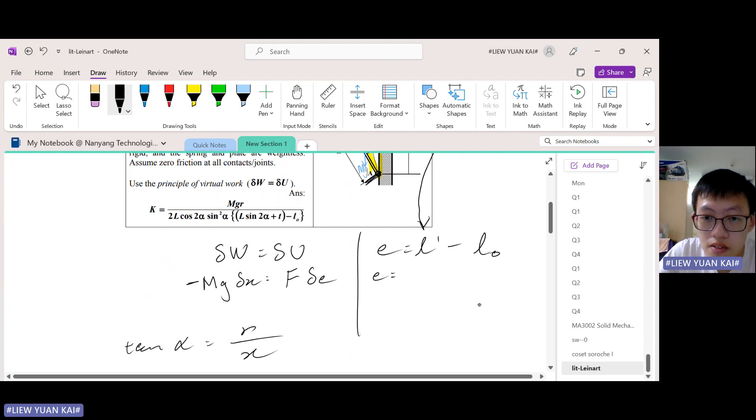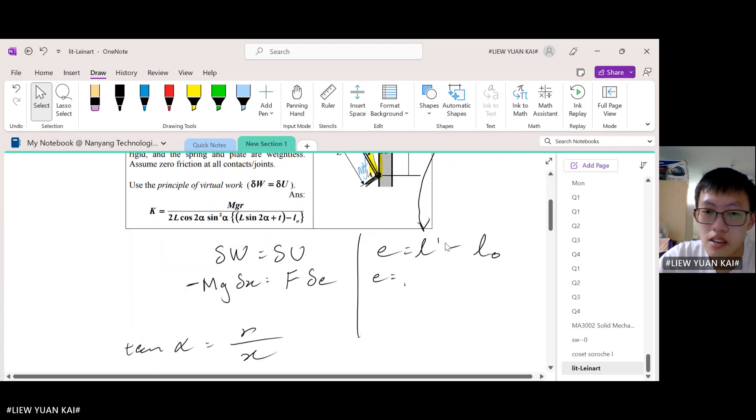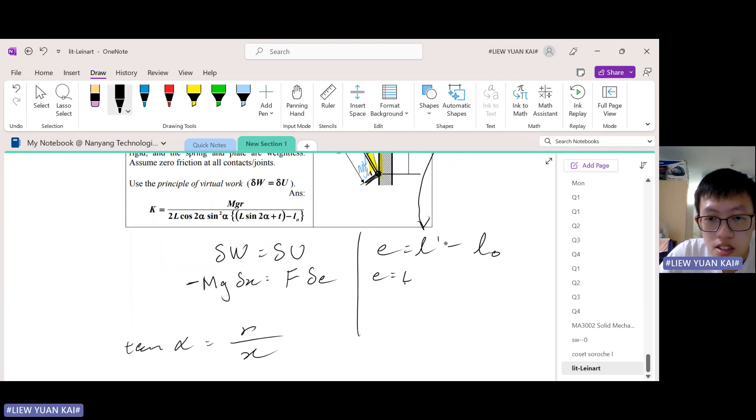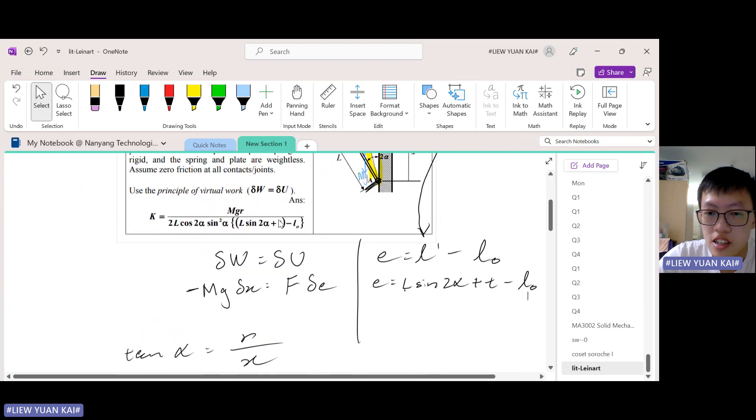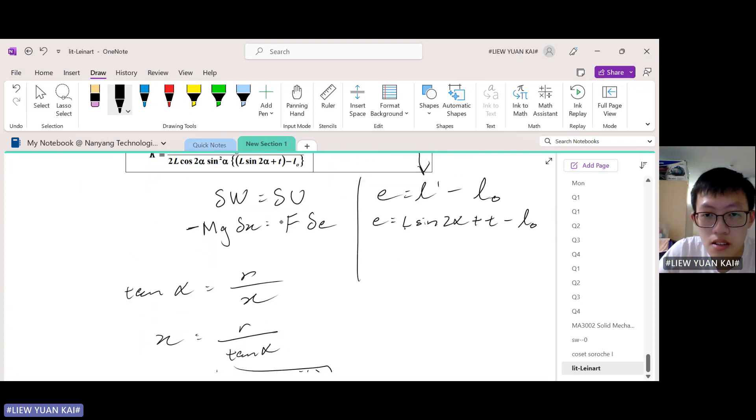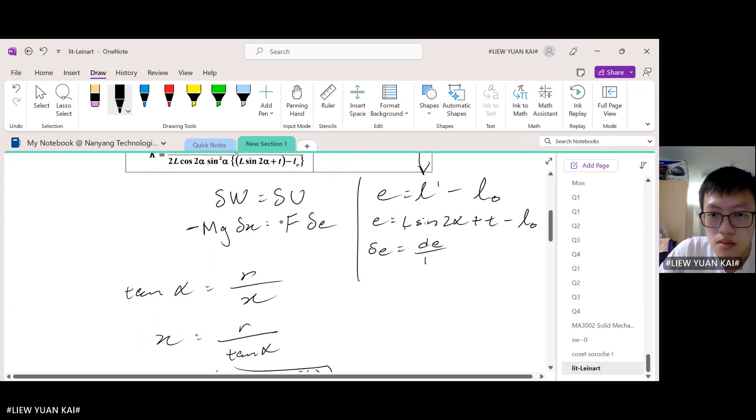So we can substitute this into here. We get, what is this? L sin 2α plus T, L sin 2α plus T minus L naught. L naught is the original length that he gave us.